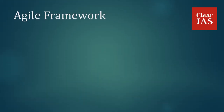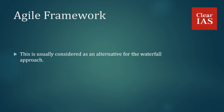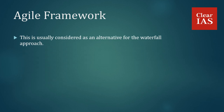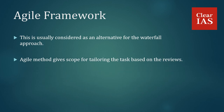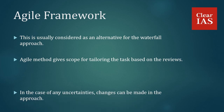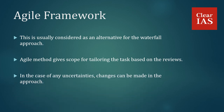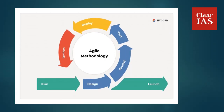To overcome the cons of the Waterfall Approach, the Agile Framework is an alternative. This is usually considered as an alternative for the waterfall approach. The Agile method gives scope for tailoring the task based on reviews. In the case of any uncertainties, changes can be made in the approach. It gives the opportunity to make any changes in between when uncertainties crop up during the course of the plan, and it allows for feedback to be considered and for necessary changes to be made.